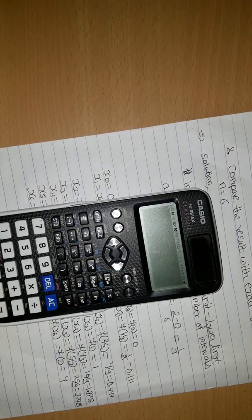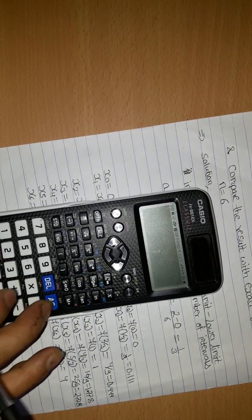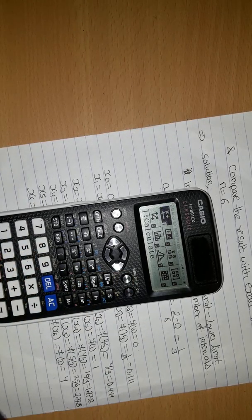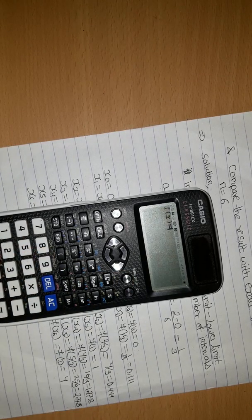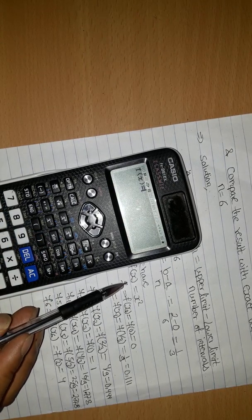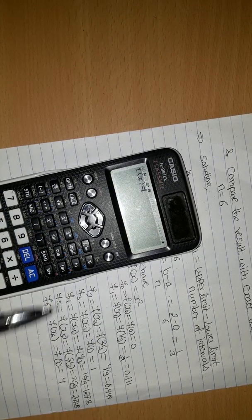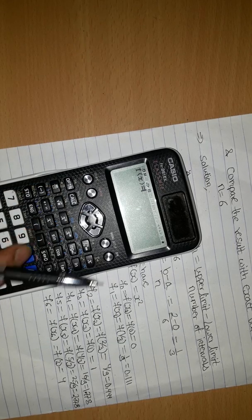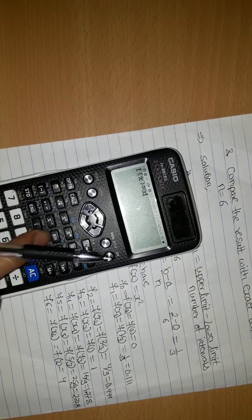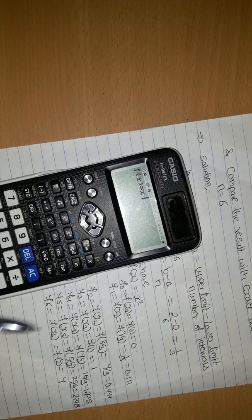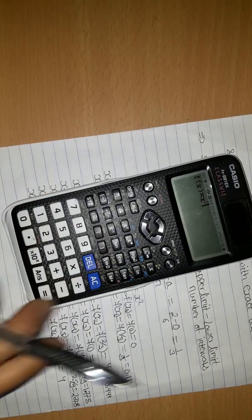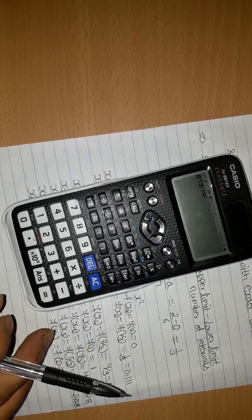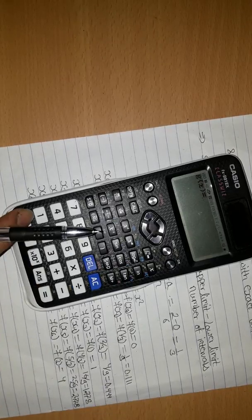First of all, press AC, menu setup, 9 for function. F(X) is equal to X square. Alpha X, X square is equal to, J(X) is equal to 0.